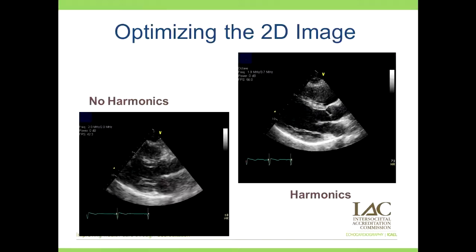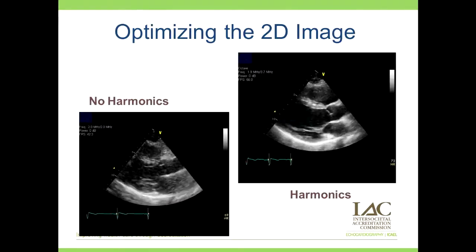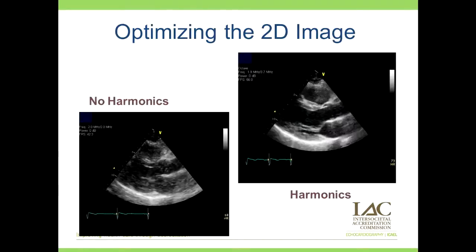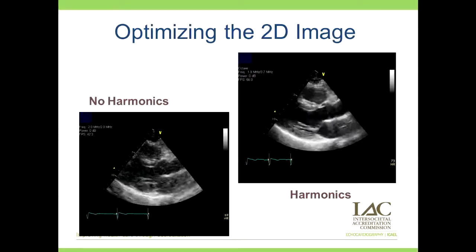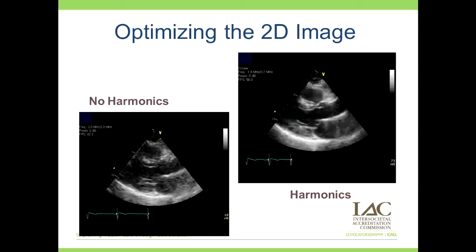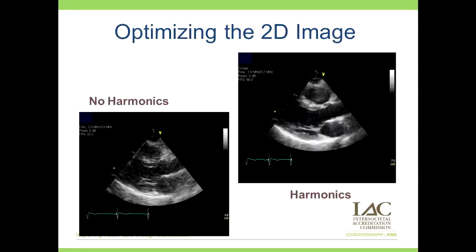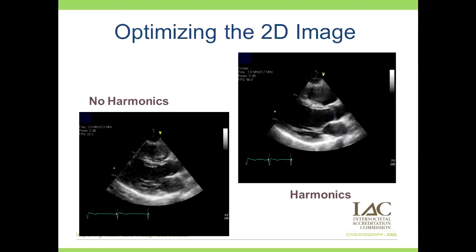Let's start by optimizing the 2D image. We know harmonics has been around in the ECHO lab for some time and we utilize it on a daily basis. Notice the image on the left compared to the harmonics image on the right — the difference in image quality, resolution, and how harmonics brings out better endocardial definition on our echocardiograms. This is one thing we do on a daily basis to help optimize our 2D image.